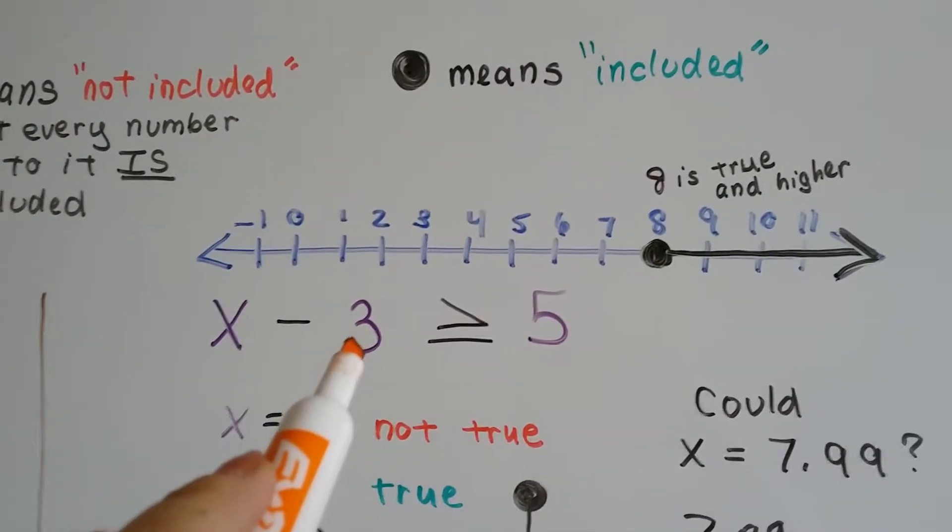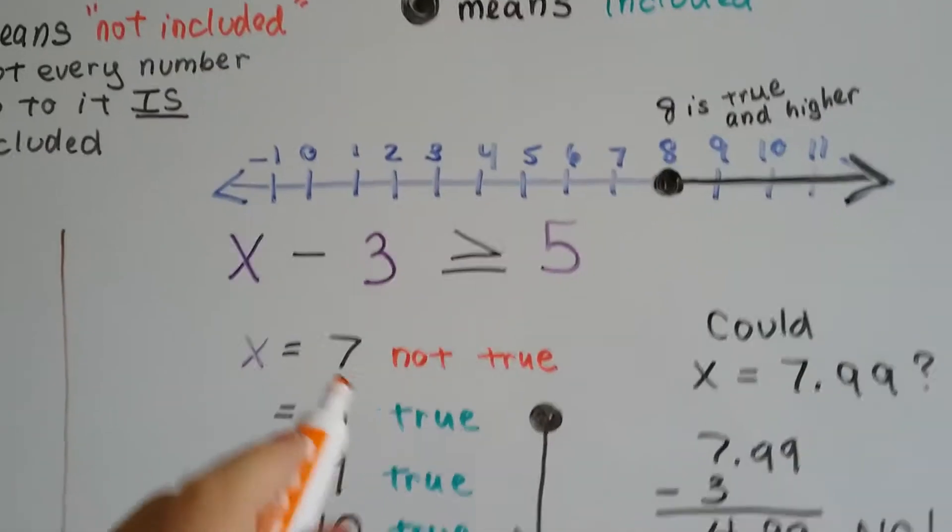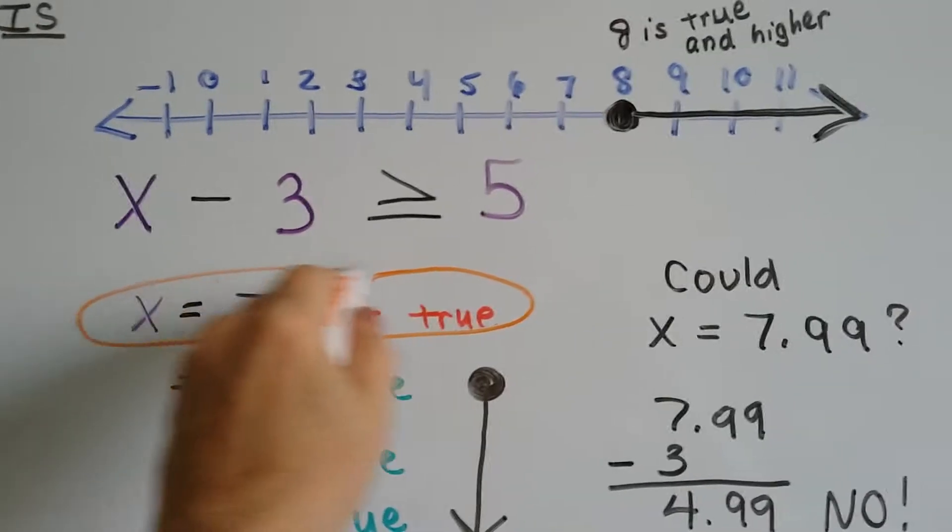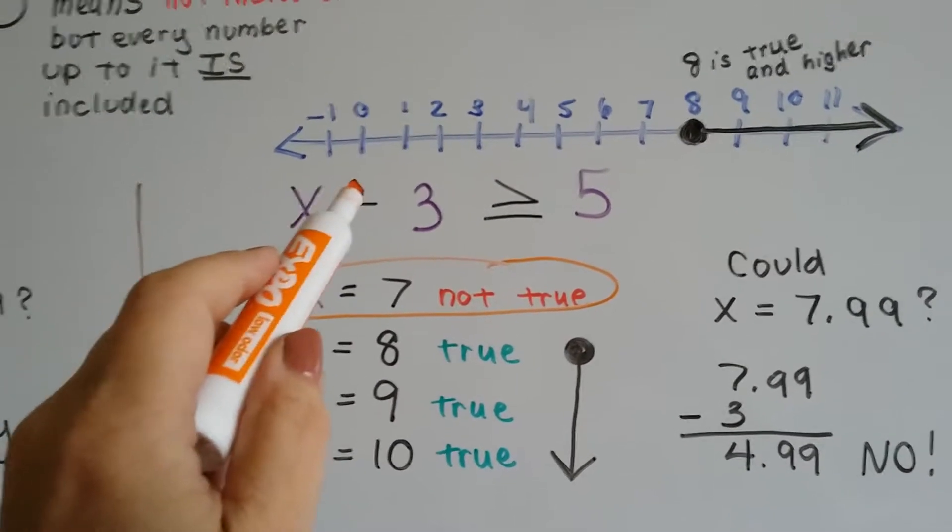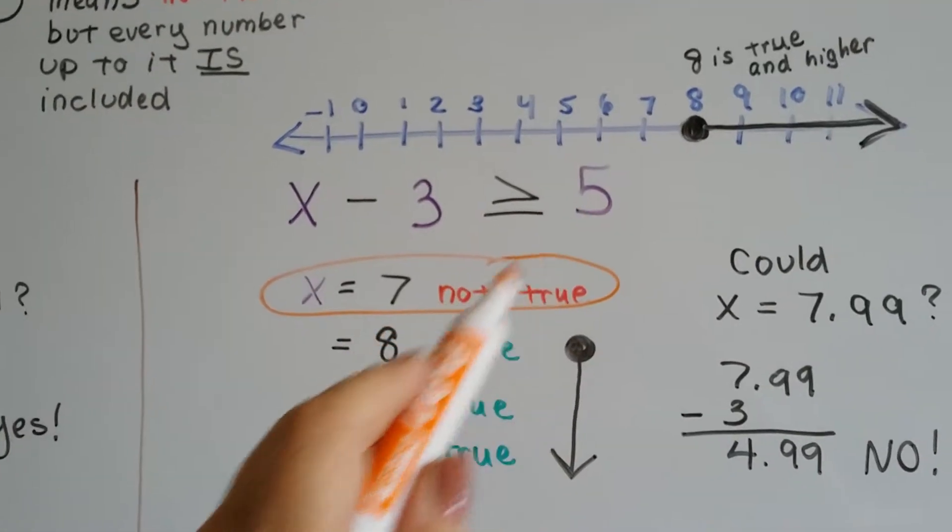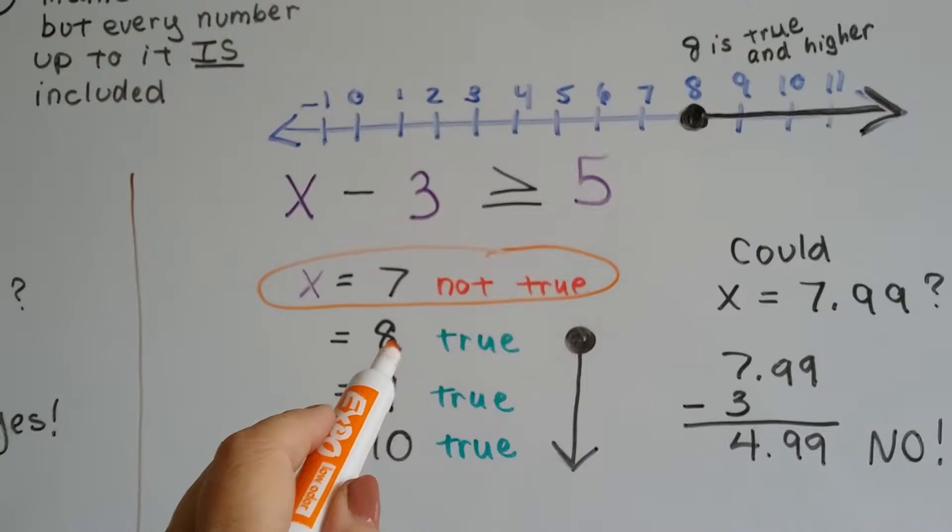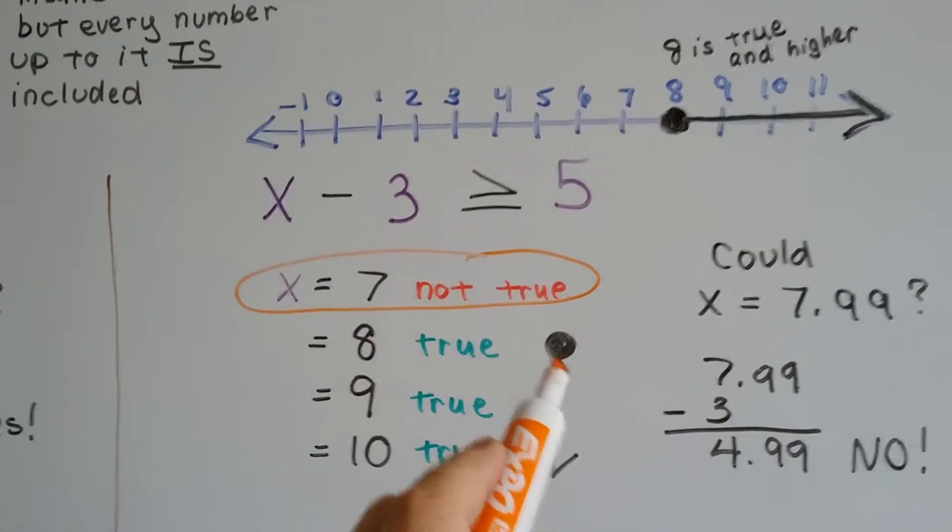Could x be 7? 7 minus 3 is 4. Well, that's not greater than or equal to 5, so that's not true. So we can't count 7. How about 8? 8 minus 3? Is that greater than or equal to 5? It's equal to 5, so 8 is true. It's included in the answer.